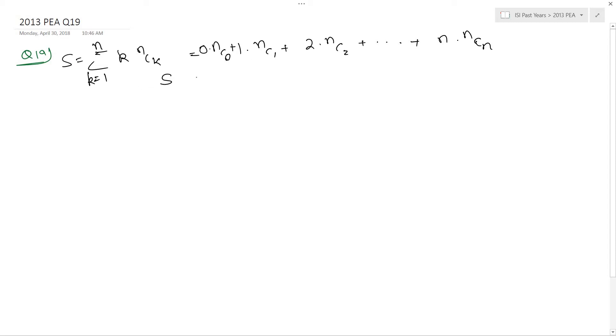Now, another way to write this sum is s equals n into n c 0 plus n minus 1 into n c 1 plus n minus 2 into n c 2 and so on till 0 into n c n.